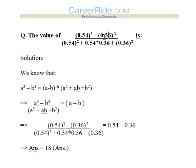We have two values here: 0.54 and 0.36. These two things are only being used in this whole given question. So a would be 0.54 and b would be 0.36. We can equate it here and we get the answer as 0.54 - 0.36, that is 0.18.